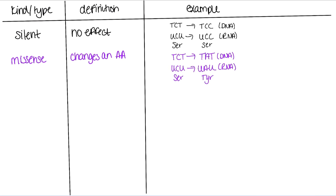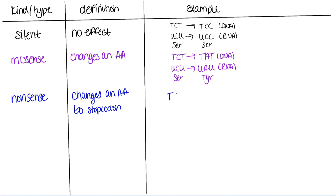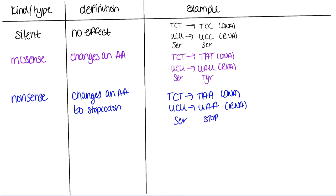The third type of mutation is a nonsense mutation. This changes an amino acid, but the change is very specific — it changes an amino acid to a stop codon. Using our same example of TCT, now let's change that to TAA. If we transcribe that, at the RNA level we go from UCU to UAA, and now we go from a serine to a stop. This can lead to a premature stop, which means that the protein may not be as long as it should be.